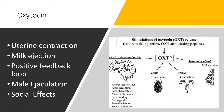Oxytocin is also involved in ejaculation. A burst of oxytocin is released from the posterior pituitary into general circulation, which stimulates contractions of the reproductive organs similar to those in females, but in this case aids in sperm release. That oxytocin burst acts on the seminiferous tubules, the epididymis, and the prostate gland.